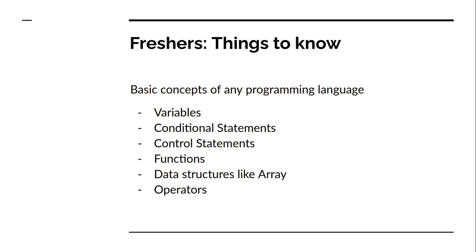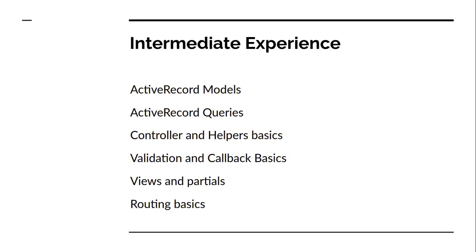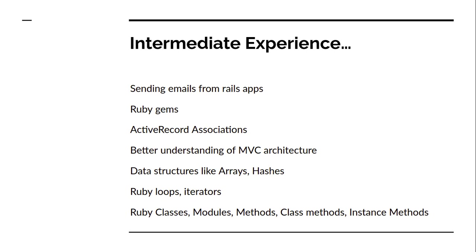As an intermediate developer, there are some things expected from you. An intermediate candidate is considered to have knowledge of all the concepts mentioned for fresher candidates. Beyond those, they must know: basics of Active Record models, Active Record queries, controllers and helpers, validations and callbacks, views and partials, routing basics, how to send emails from a Rails application, knowledge of Ruby gems, and basics of Active Record associations.